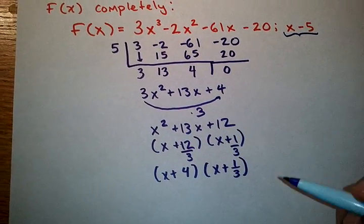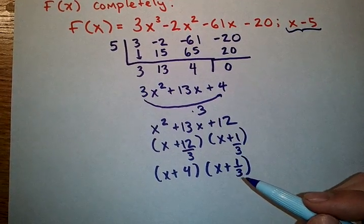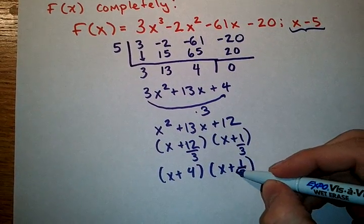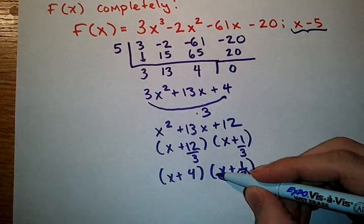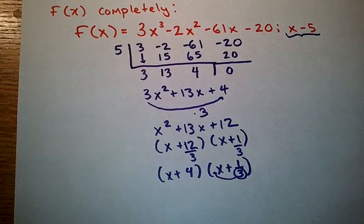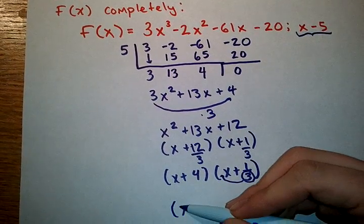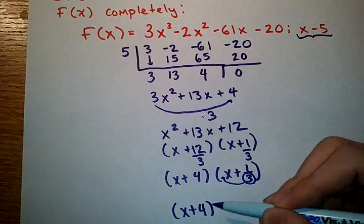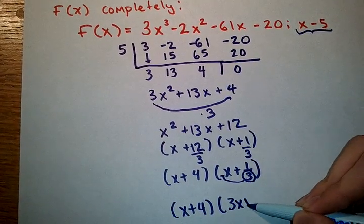This method of factoring gets its name, the bottoms-up method, from taking the bottom of any denominators and moving them up in front of the variable. Therefore, our factors are x plus 4 and 3x plus 1.